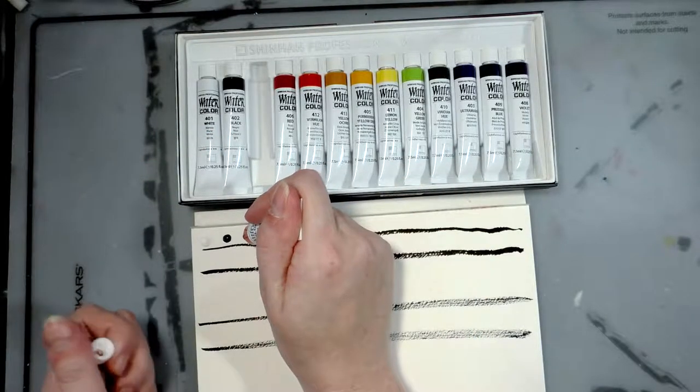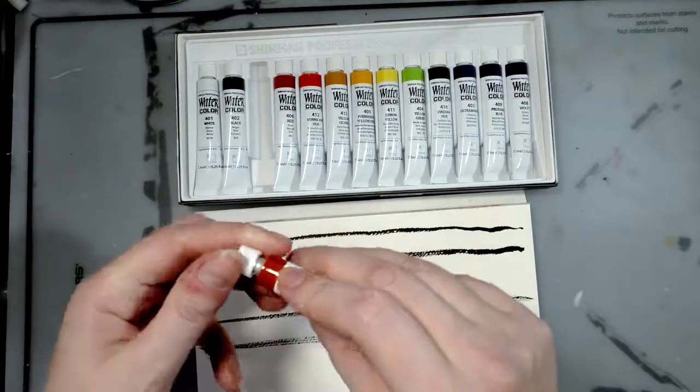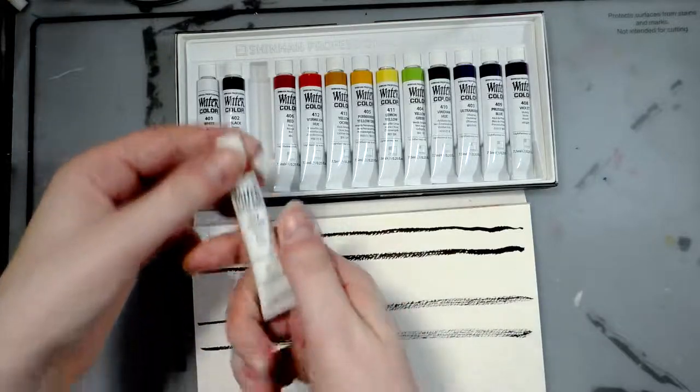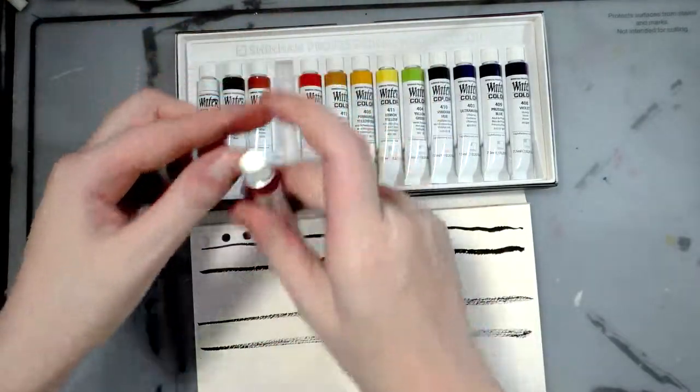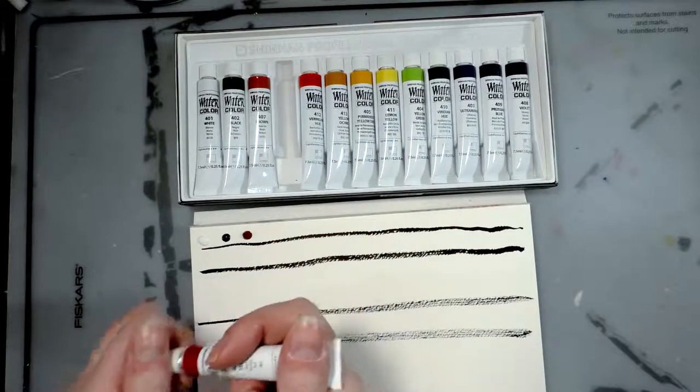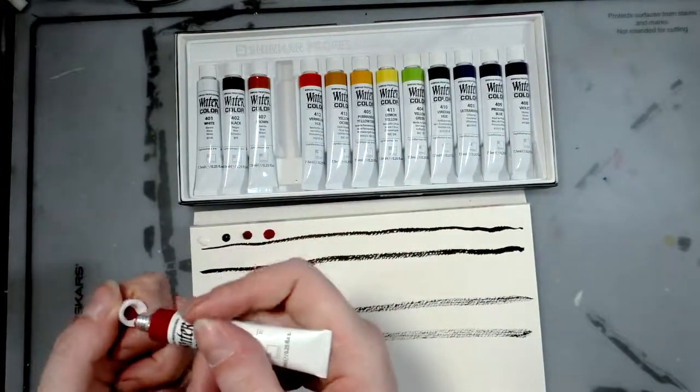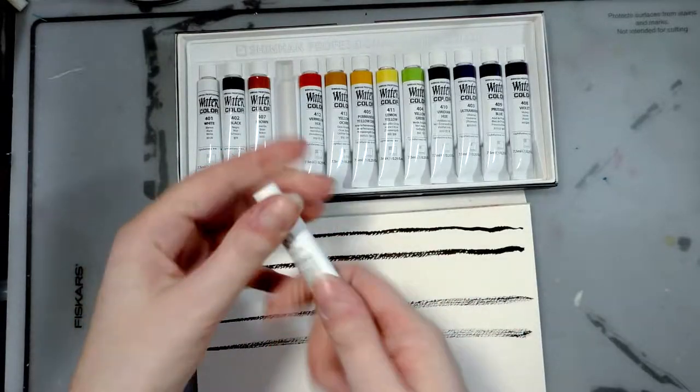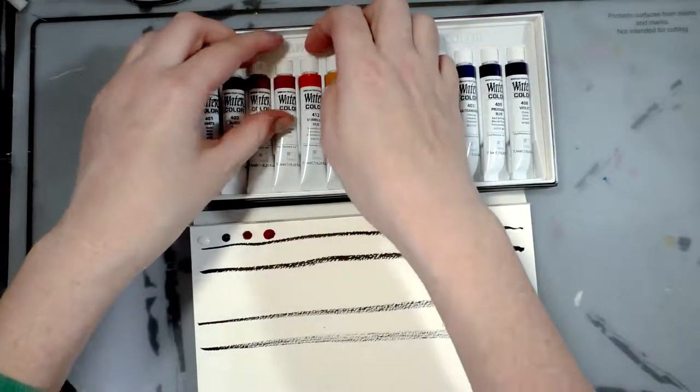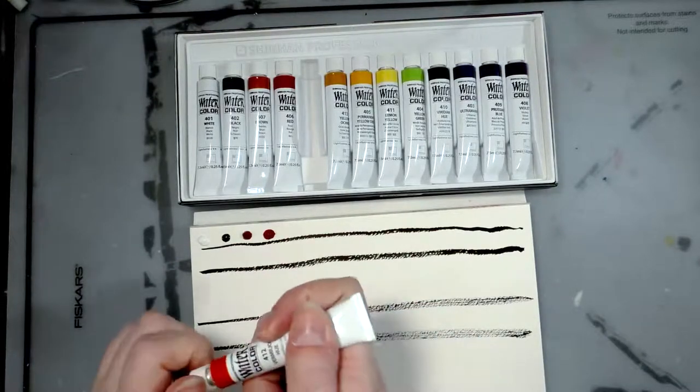Their watercolors seem to be color coded - I'm not sure if this corresponds with their marker system. It would be really cool if Shin Han has an overarching color system for all their products the way Faber-Castell has, or the way Kuretake has the Kuro color system.